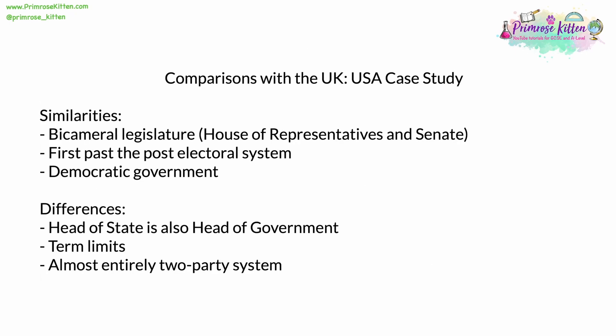We can take a useful case study in the USA and compare it with government in the UK. There are several similarities. Like the UK, the USA is a democracy. It has a bicameral legislature — a House of Representatives, equivalent to our House of Commons, consisting of a larger number of elected representatives — and a Senate. However, in the UK the House of Lords is unelected, comprising mostly appointed peers, some hereditary peers, and a small number of bishops. In the US, the Senate is elected — two senators per state.